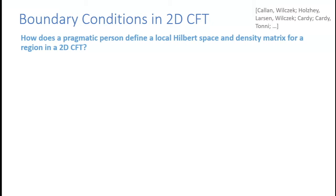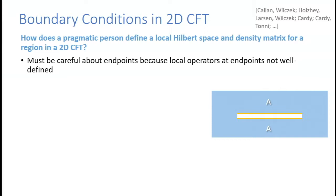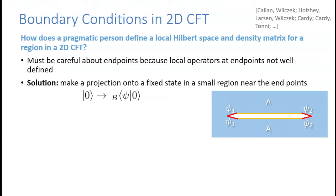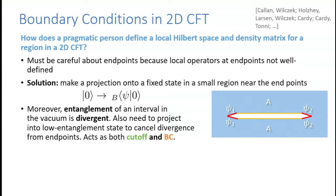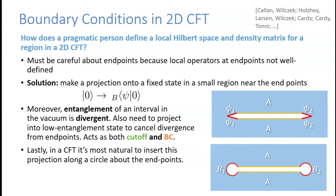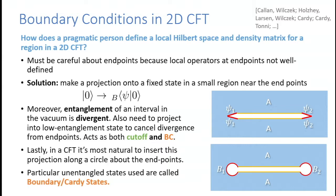How does a pragmatic person define a local Hilbert space and density matrix for a region in a 2D CFT? We must be careful about endpoints because local operators there are not well-defined, and the solution is to project onto some fixed state at the endpoints. Moreover, the entanglement of an interval in the vacuum is divergent, so I also want to project onto some low-entanglement state to cancel divergences. In a CFT it's most natural to insert this projection along a circle, not a horizontal cut. The particular unentangled states used are called boundary or Cardy states, and they define a Hilbert space for the interval.